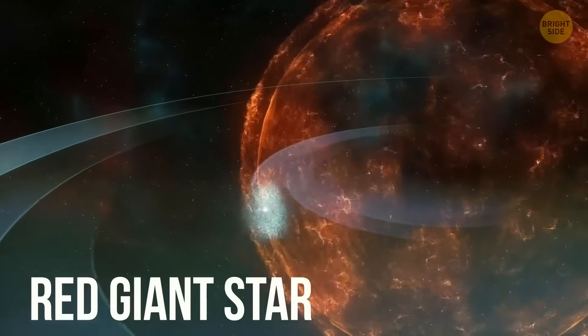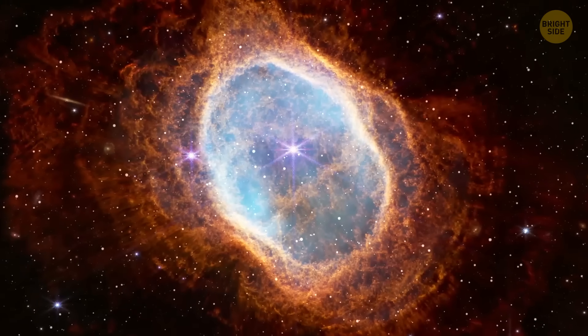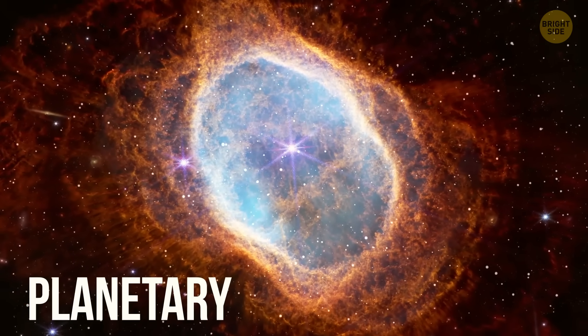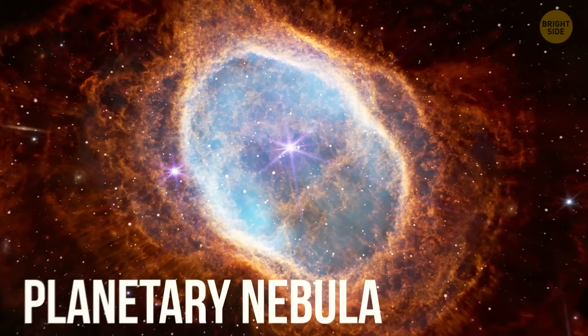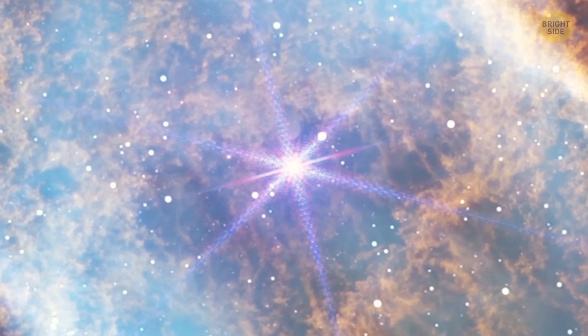After using up its fuel, it will shed its outer layers, creating a glowing ring of gas called a planetary nebula. What's left will be a cooling white dwarf star.